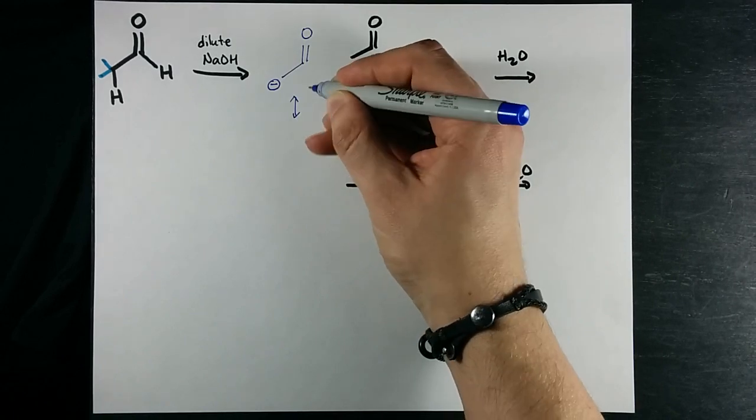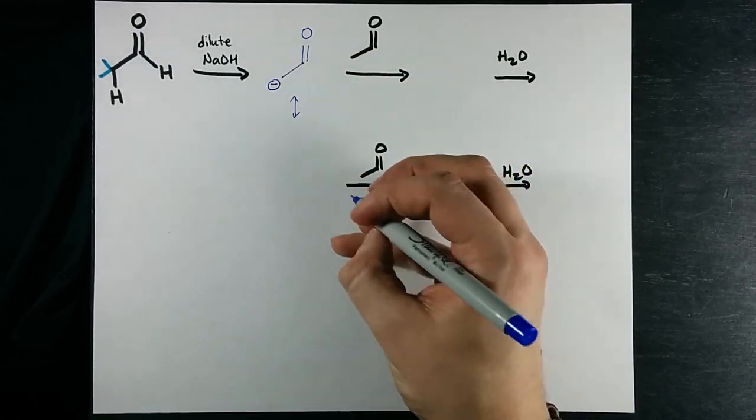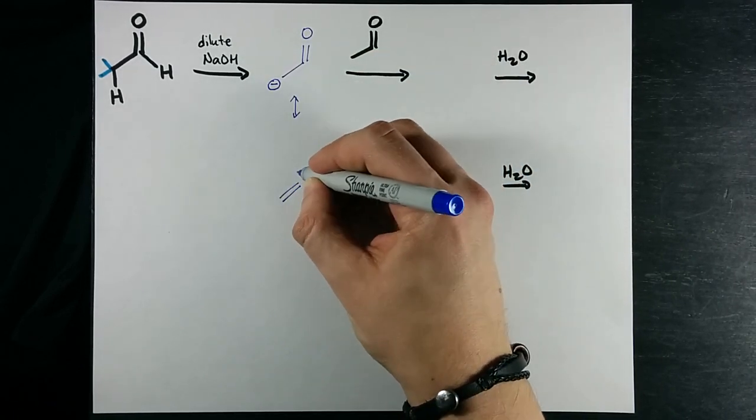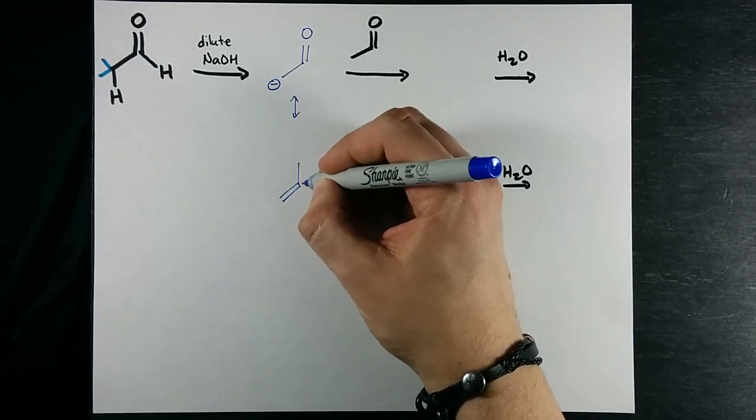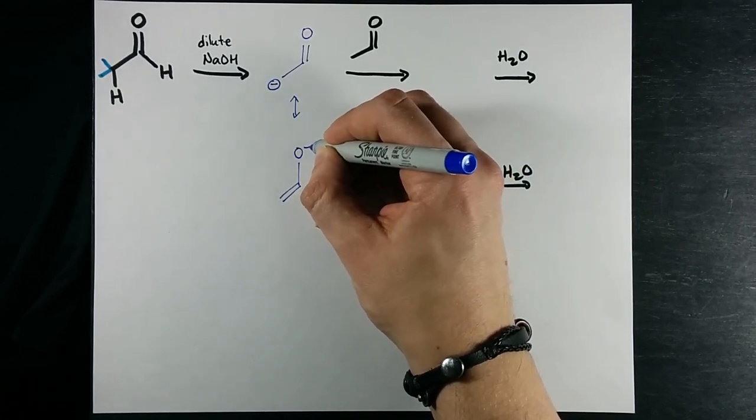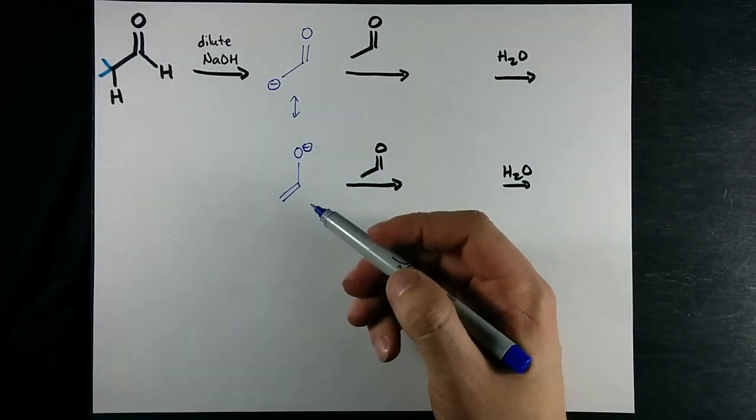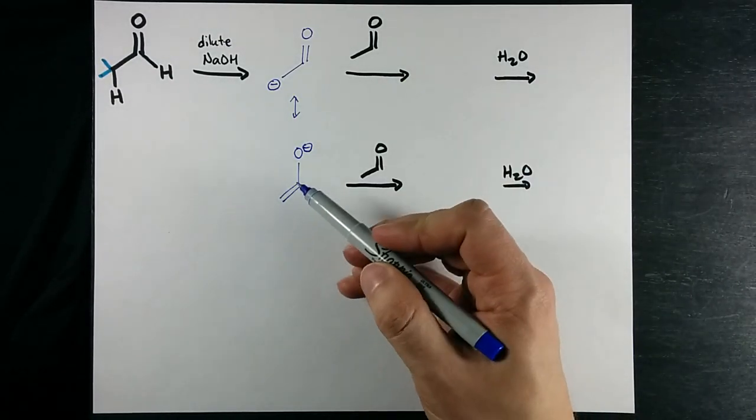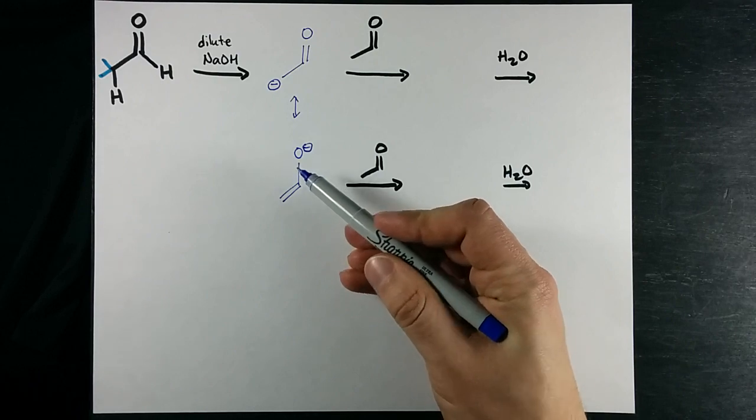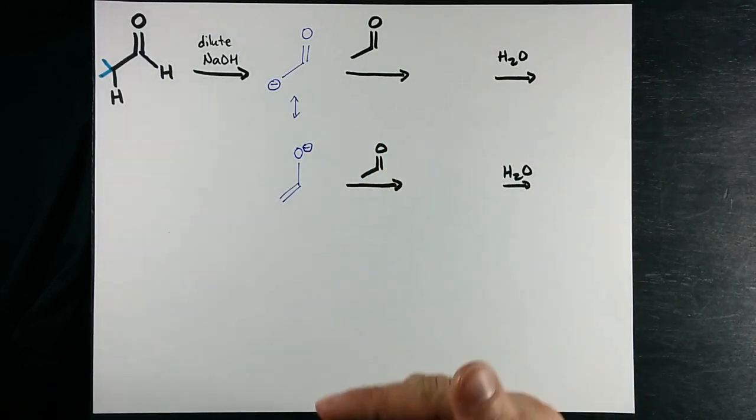Now you may notice that there is a resonance structure here where you've formed a double bond and you've moved that negative charge center up to the oxygen. This is actually the more stable of the two because it has the negative charge on the electronegative atom.